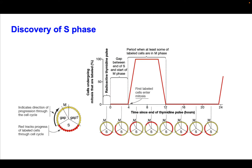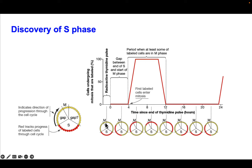The discovery of S phase came about through pulse-chase experiments. In this experiment, they used radioactive thymidine, which labeled DNA that was being actively synthesized in the cell. The red tracks the progress of labeled cells through the cell cycle. These cells that were labeled were undergoing S phase, and then they were followed through the different periods of the cell cycle. What they first observed was that there was a gap between the end of S phase and the time it took those cells to enter M phase — so there was this gap period, the first gap for labeled cells to enter mitosis.